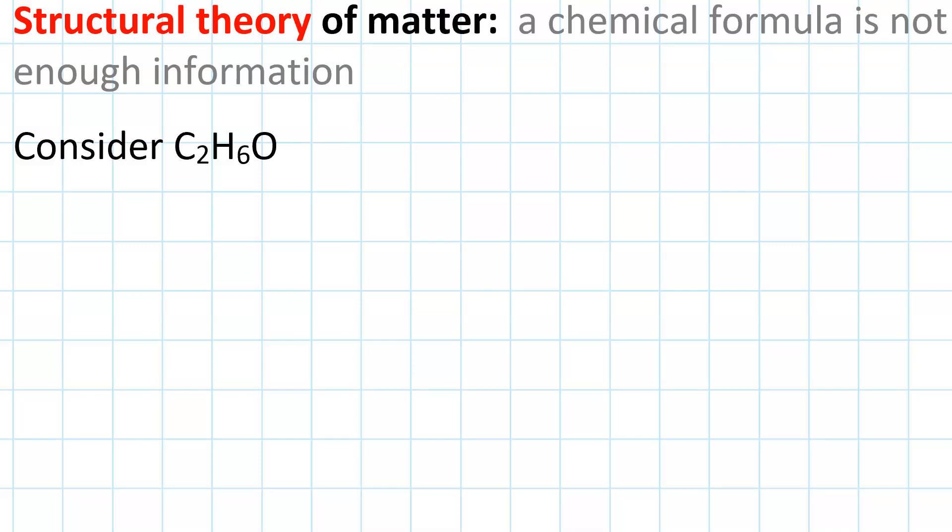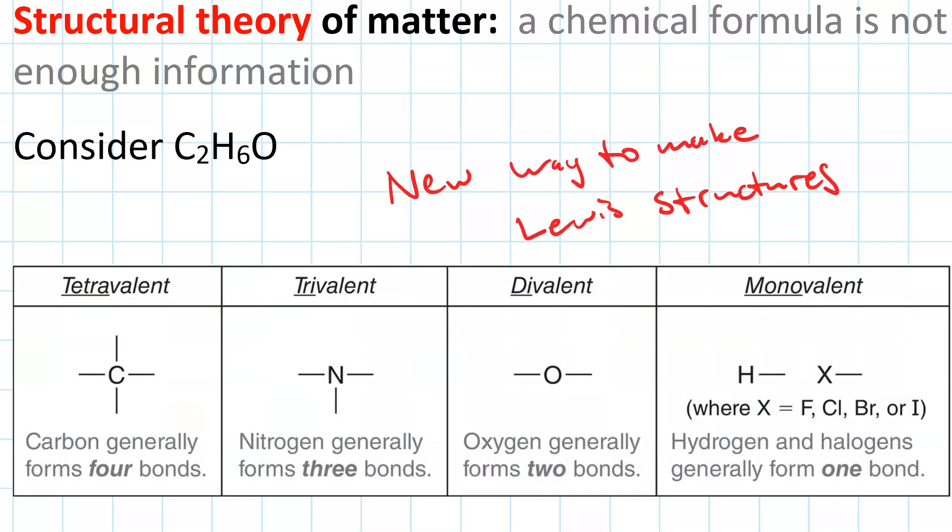You know how to do Lewis structures from general chemistry. Here's a way to make Lewis structures specific to organic chemistry. It deals with the valency of each atom involved—that is, how many bonds it can form.